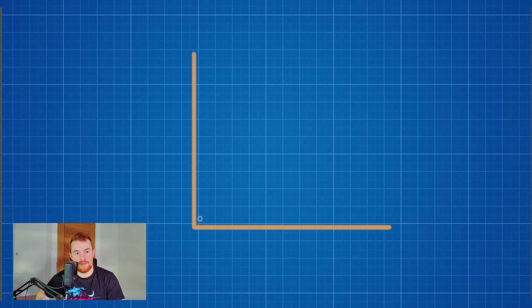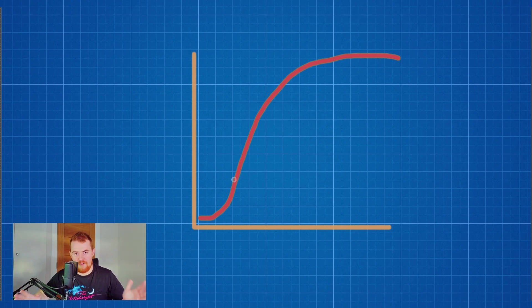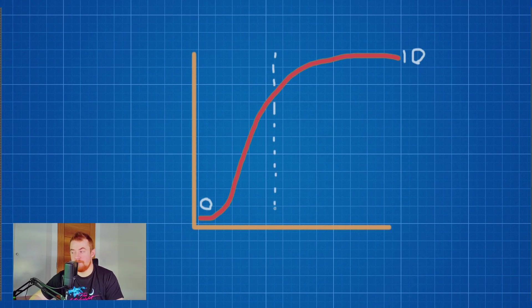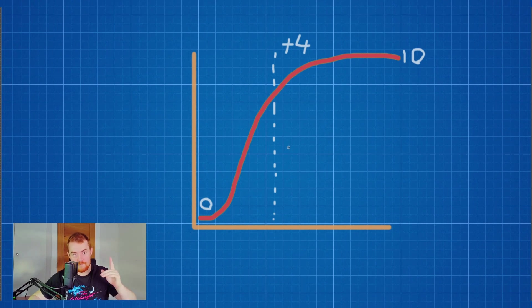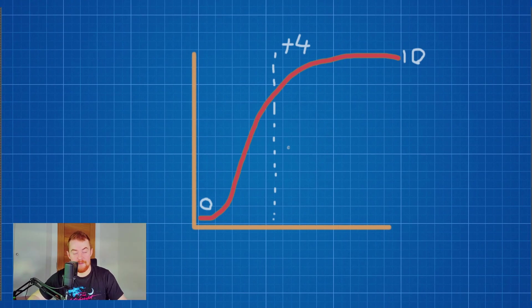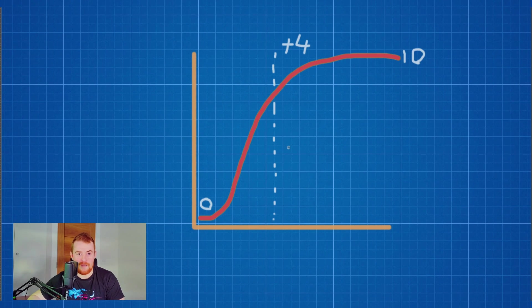The second part of a leveling system is the stats — making your character stronger when they level up. You want to add a little bit of randomness so not every player ends up the same. You create something called a weighted random: you have your minimum and maximum stat increase, and a curve within those ranges. If your character has a high strength attribute, you'd have a concave curve so they're more likely to get the higher end of the max.